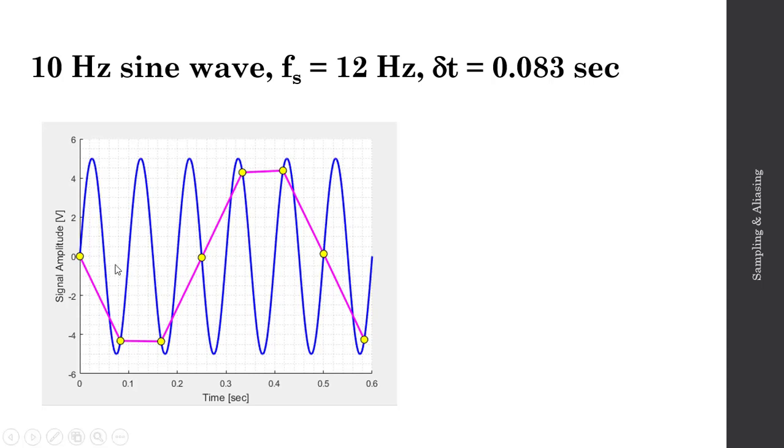Where this sampled signal now looks nothing like the 10 Hz sine wave, and in fact, it looks more like a 2 Hz signal. This is ultimately a consequence of slowing down our sampling frequency from 100 Hz down to 27, down to 12 Hz. We're now seeing what appears to be a 2 Hz reconstructed sine wave, even though our original signal is a 10 Hz sine wave.